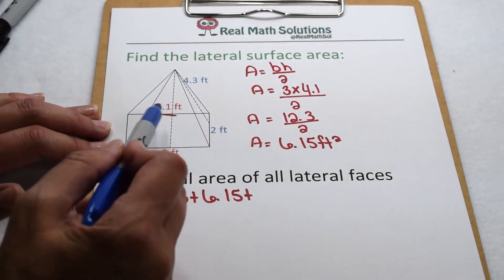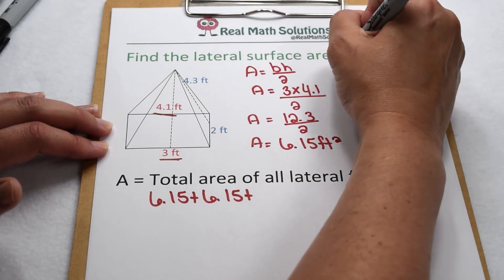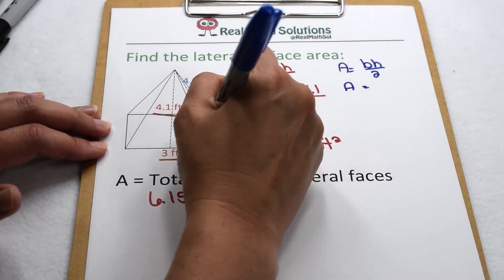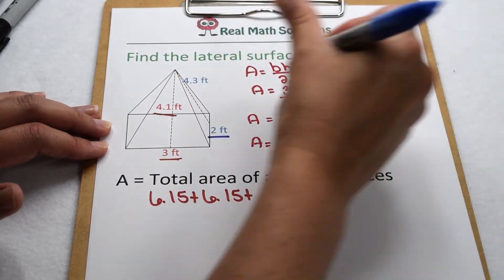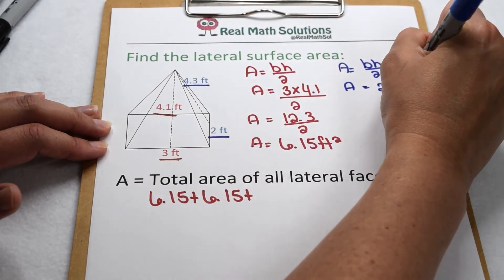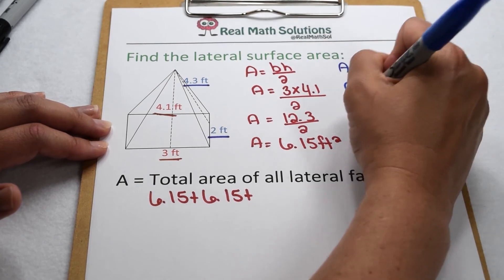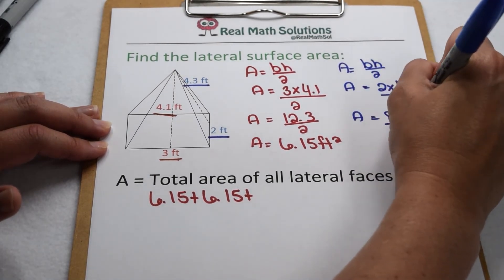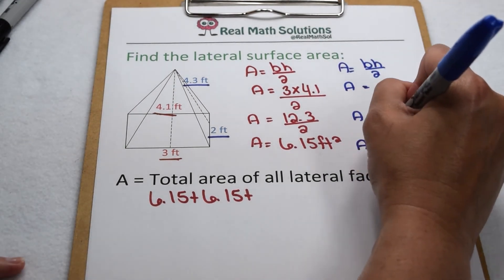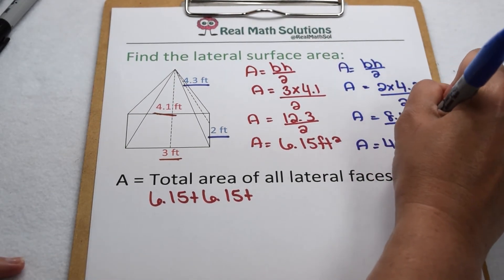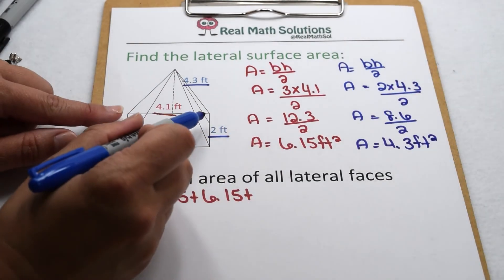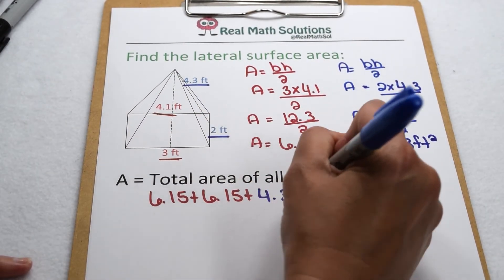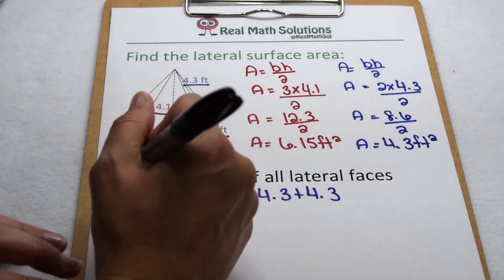Then we do the same thing for the lateral faces along the width. Area of a triangle is still base times height divided by two. This time our base is 2 feet and our slant height is 4.3 feet. 2 times 4.3 comes out to be 8.6, and we divide that by two, giving us 4.3 square feet. So the area of the right face and the left face are both 4.3 square feet.